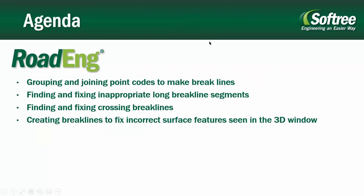Before I pass on to Dave, just want to show you what we have on the agenda today. Today's webinar will be broken into four main parts. First, we'll use road ends to demonstrate how to group and join point codes to make break lines. Dave is going to continue showing how to find and fix inappropriate long break line segments. Finding and fixing crossing break lines comes next. And last, we'll show you how to create break lines to fix incorrect surface features seen in the 3D window.